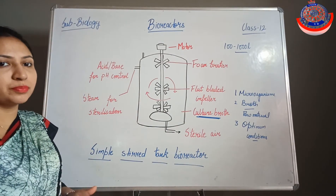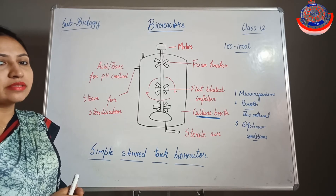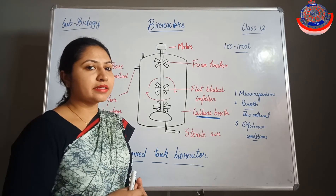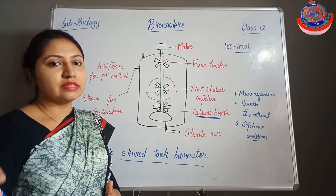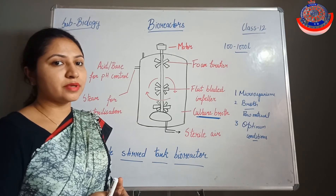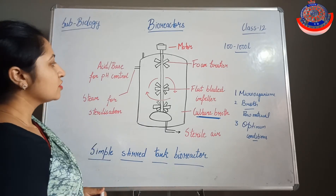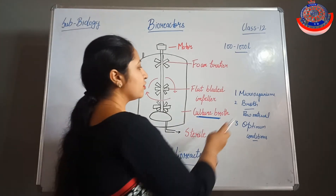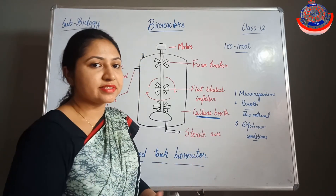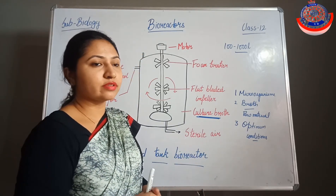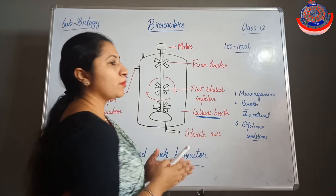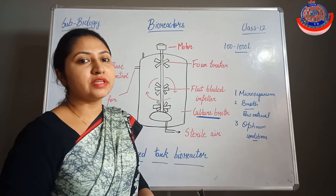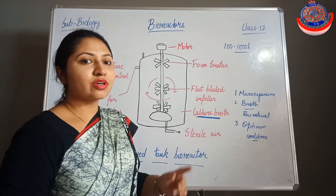For example, for beer production - which we discussed in Chapter 10, Microbes in Human Welfare - Saccharomyces cerevisiae is the microorganism responsible for the production of beer. In this bioreactor, we have to take the microorganism as well as the raw material, which will be fruit juices or molasses. Optimum conditions mean the pH and temperature should be optimum for the growth of the microorganisms.